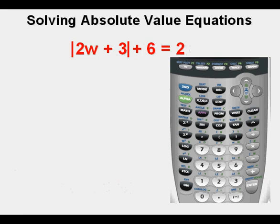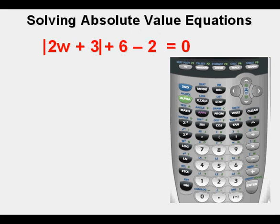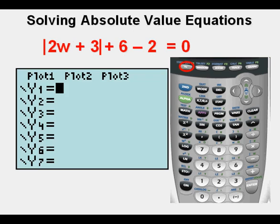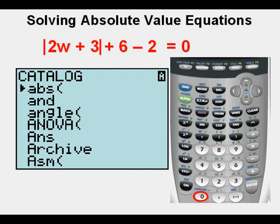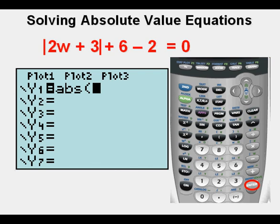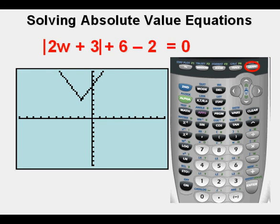Let's try another one. We first solve for zero by bringing the 2 to the left of the equal sign where it becomes negative 2 and leaves 0 on the right side. We press the second key or the y equals key. And we enter the left side of the equation. We start accessing the absolute value operator by pressing first second, then the zero key with the catalog above it. Then press enter. We complete inside the absolute value notation by entering 2x plus 3 and close the parentheses. Then we complete the left side by adding 6 and subtracting 2. We graph by pressing zoom 6 for graph.